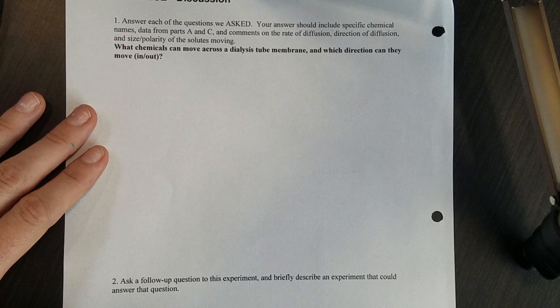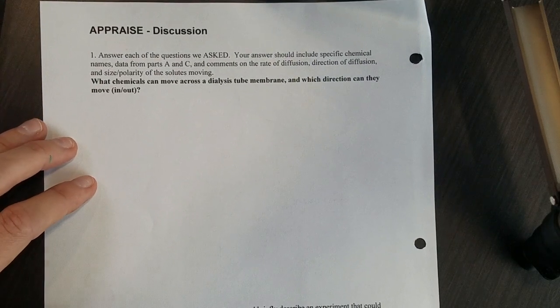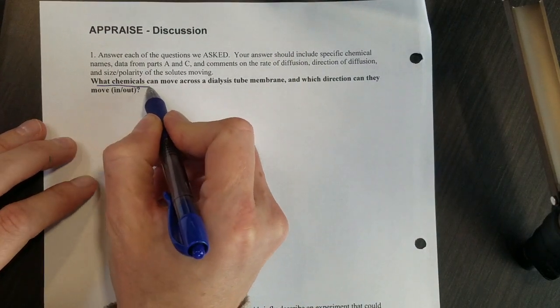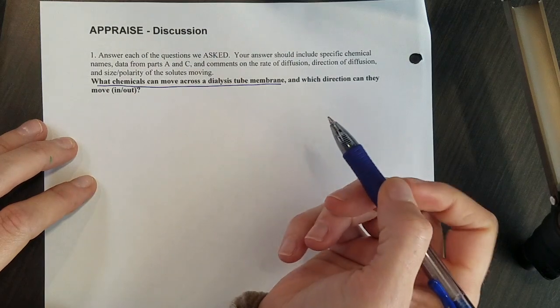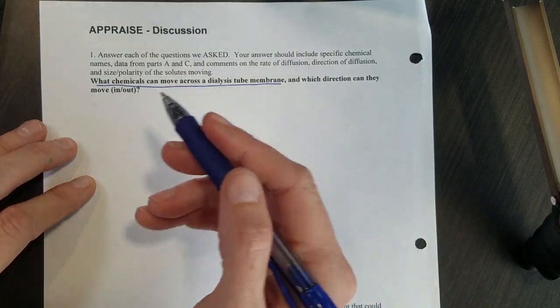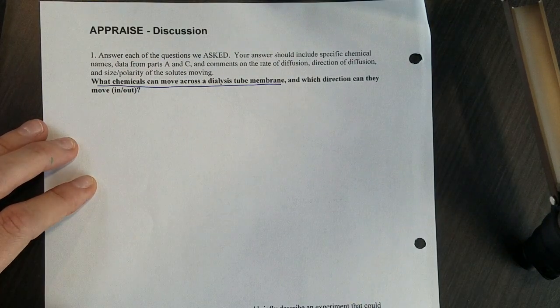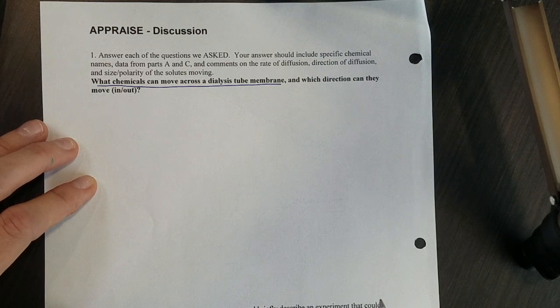Once you've done that you'll be ready to write two things. Our question is what chemicals can move across a dialysis membrane and what direction can they move? Meaning do they move into the blood or out of the blood according to what you see?